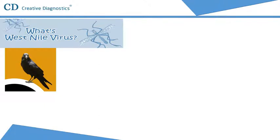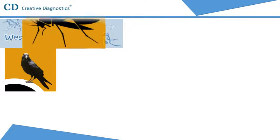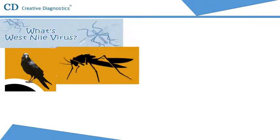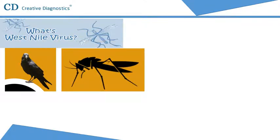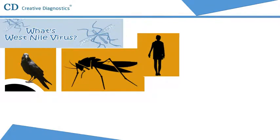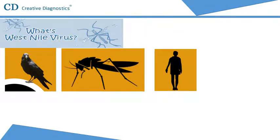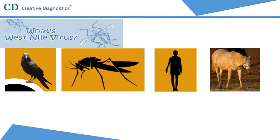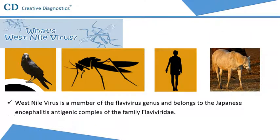Since 1999, the virus has spread throughout the U.S. and Canada, infecting birds, humans, horses, and other animals. West Nile virus is a member of the Flavivirus genus and belongs to the Japanese encephalitis antigenic complex of the family Flaviviridae.